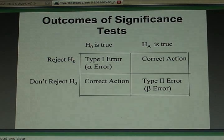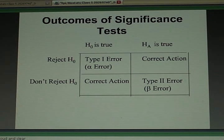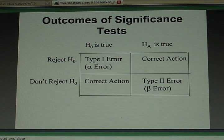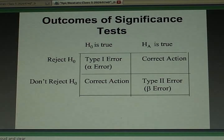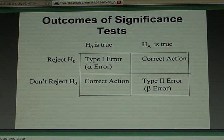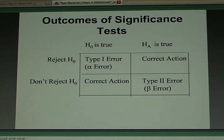The same thing when we don't reject the null hypothesis and we say our results are not statistically significant. Again, we might be making something correct or doing something incorrect. If the null hypothesis were true and we didn't reject it, we're making a correct statement. But if the null hypothesis were not true, the alternative were true, and we didn't reject the null, we are making what is known as a type 2 error or a beta error.